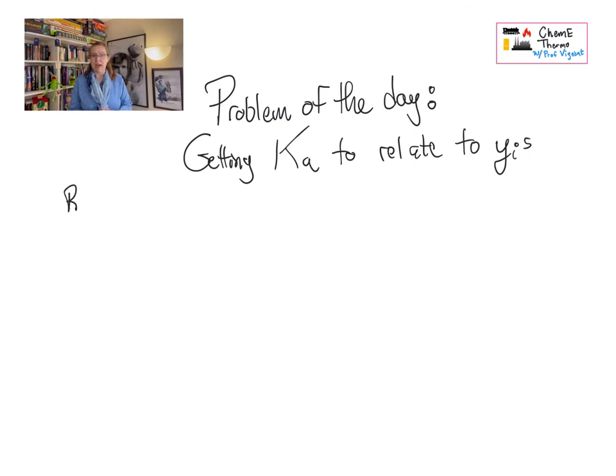You recall last time we set up the equilibrium constant and the equilibrium constraint. We talked about how delta G was a thing that we could solve for and therefore find Ka, and that Ka would be related to activities or fugacities in some way.